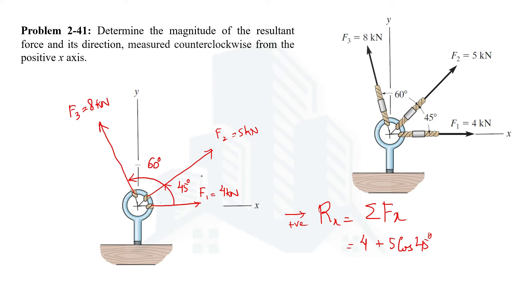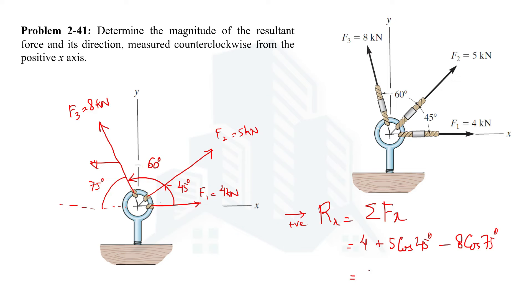The horizontal component of F3 is leftward, hence negative. The angle F3 makes with the horizontal is 75°: the total angle from positive to negative x-axis is 180°, and 45° + 60° = 105°, so 180° − 105° = 75°. Therefore F3 makes 75° with the negative x-axis, and its horizontal component is −8 cos 75°. Summing all x-components, the resultant x-component Rx = 5.464 kilonewtons.